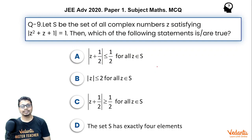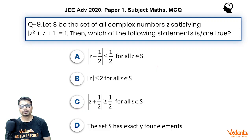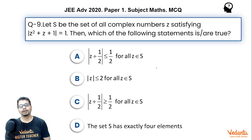Let S be the set of all complex numbers z satisfying |z² + z + 1| = 1. Then which of the following statements is or are true? This is a multiple correct type question, meaning it can have one or more options correct. Here are the four options.